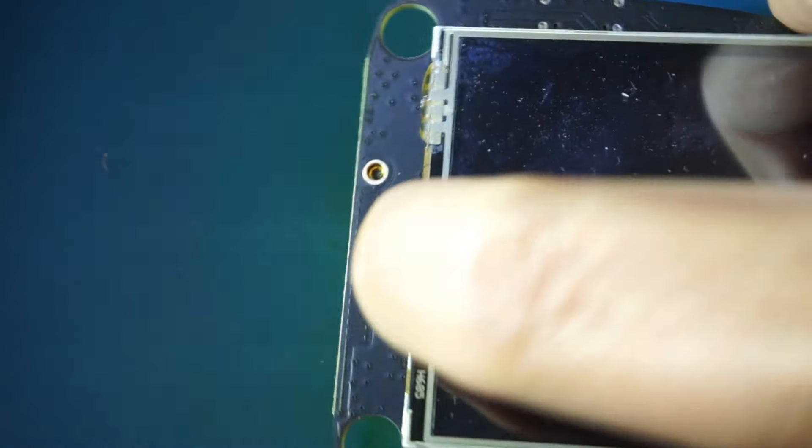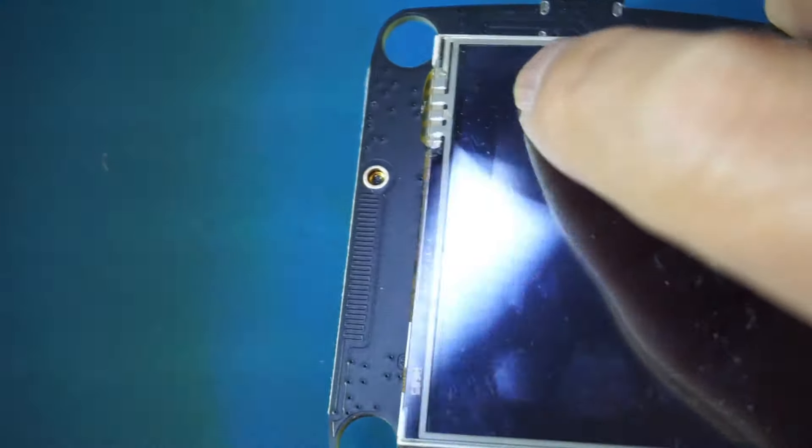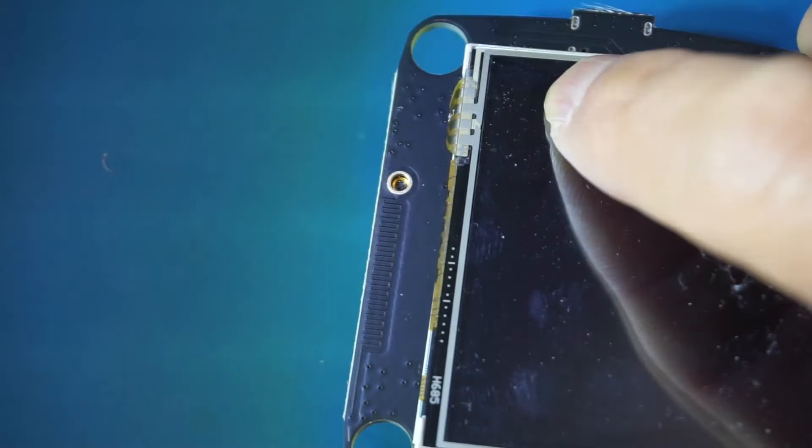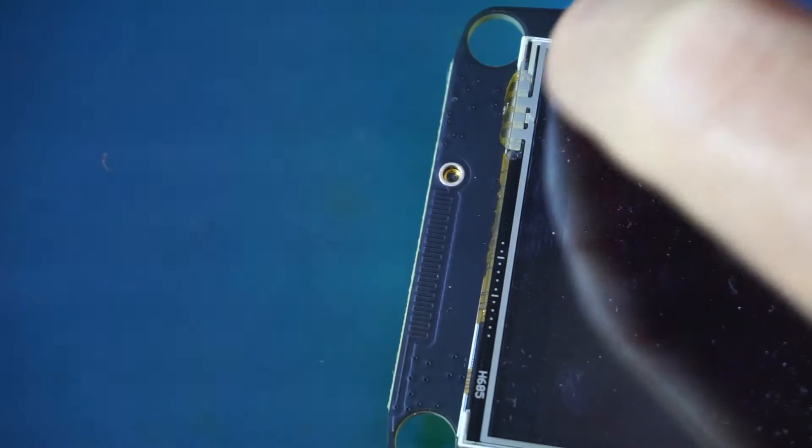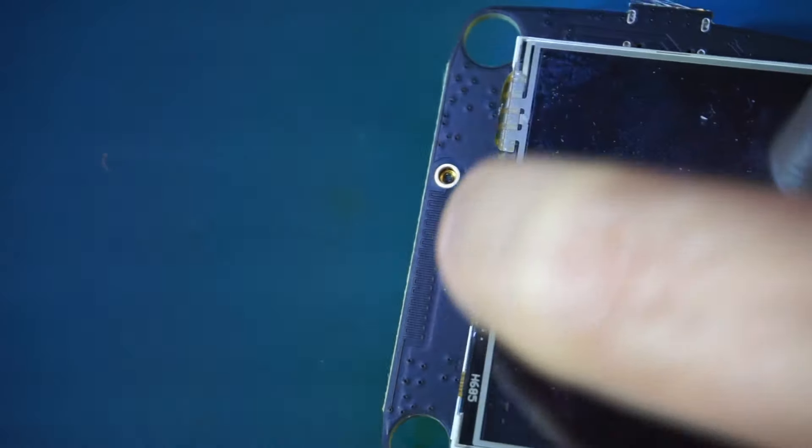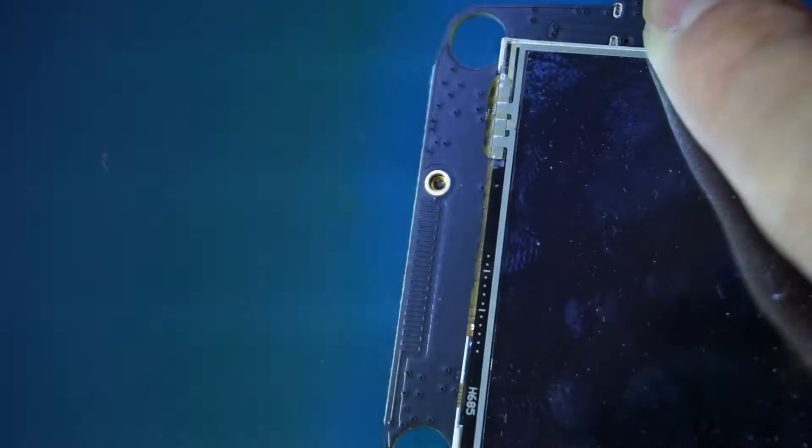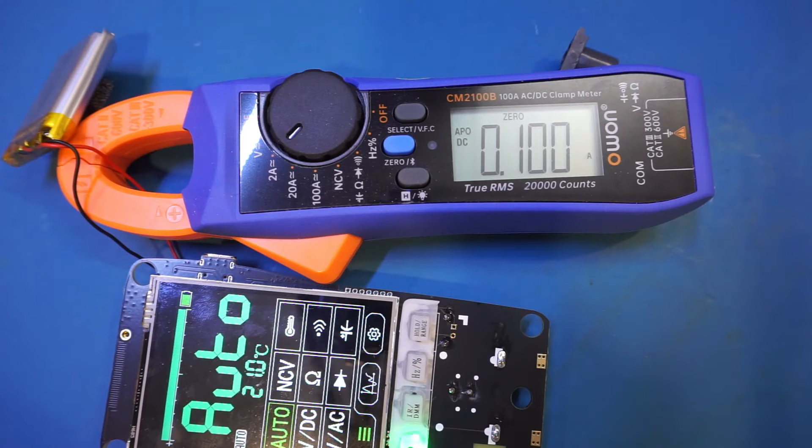In case you are wondering how the NCV detection is done, you can see on this side of the board, on the top, towards the edge, there is some edge traces. Let me just try to make it a bit more clear here. And you can see that these traces are responsible for detecting the electric field.